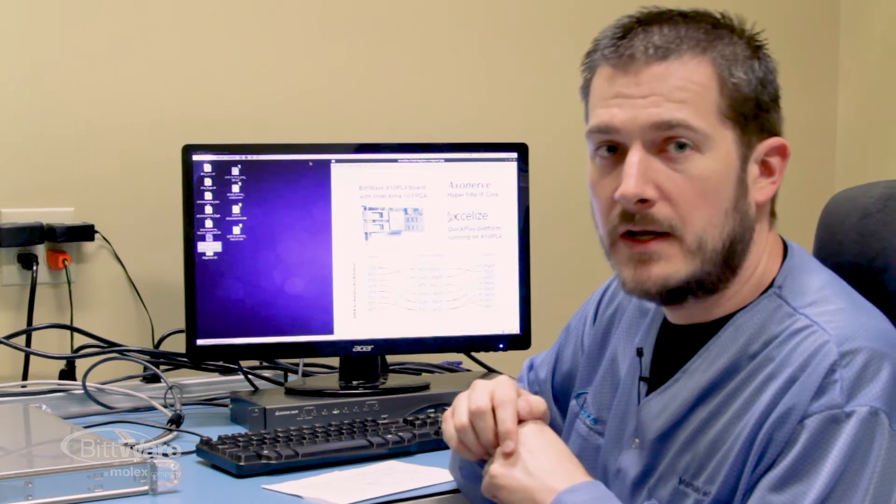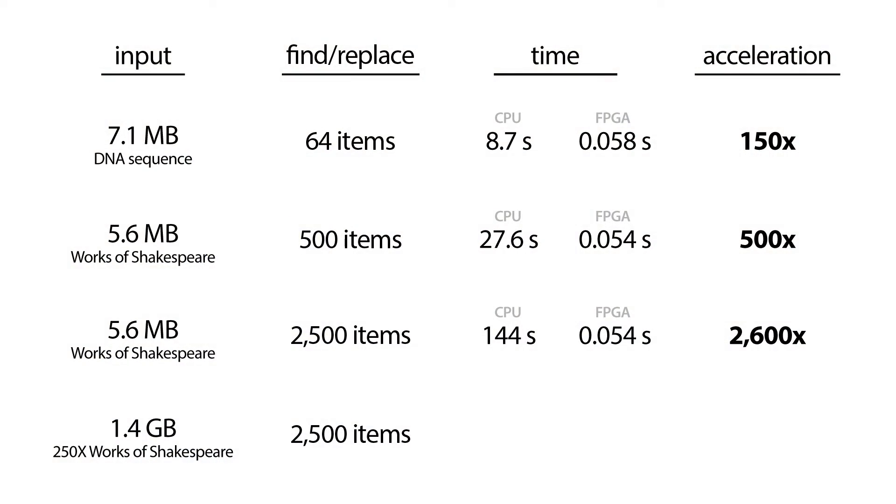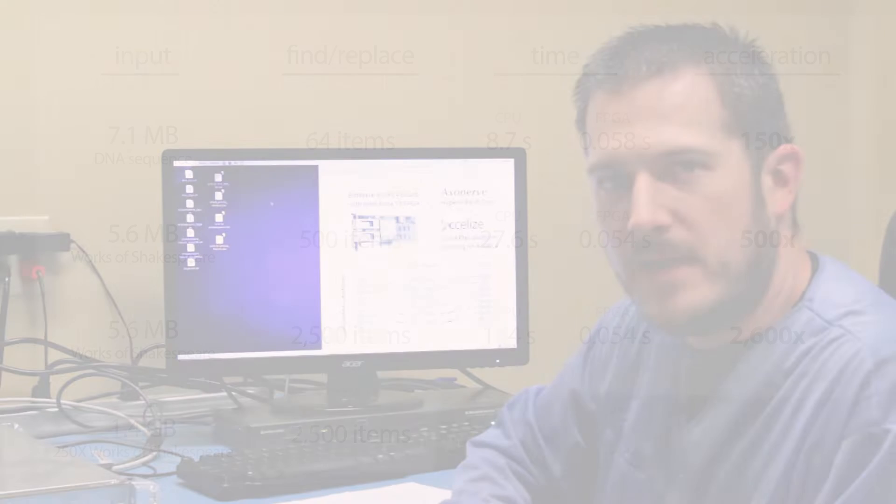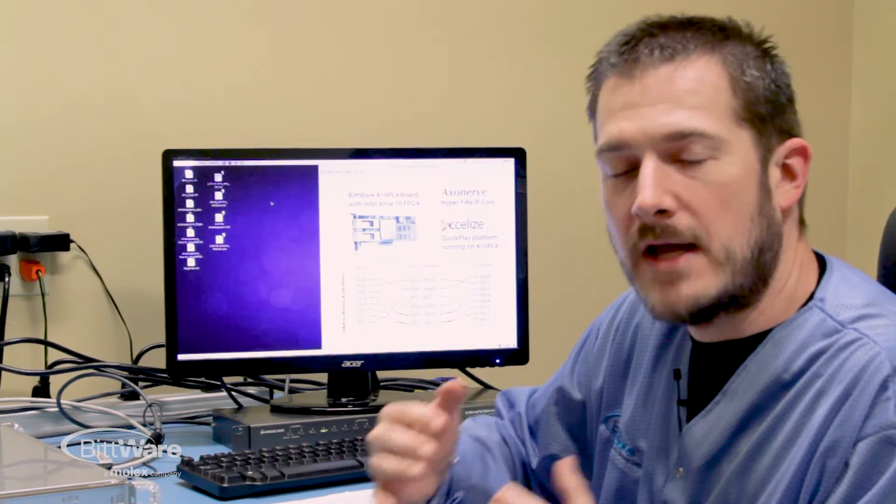So now I want to show you one more demo, and we're going to change the input file this time. It's still going to be Shakespeare, but we've copied the works of Shakespeare 250 times. So instead of a 5 megabyte file, we have a 1.4 gigabyte file. Now, again, we're going to run 2,500 find-and-replace terms. But because this is such a large file, the CPU is going to take hours and hours to do this. So we're only going to run it on the FPGA.